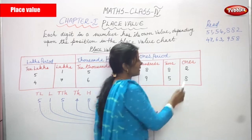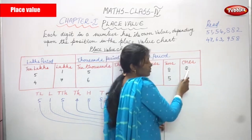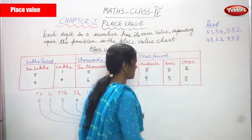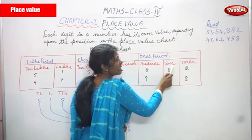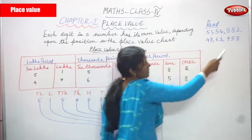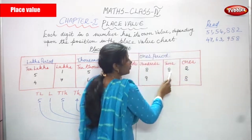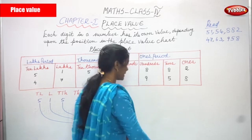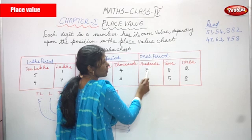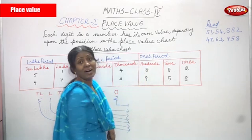The number in the ones place is two. Next, tens — what is the number in the tens place? Eight. Eight is in the position of tens. Next, again eight — this is the hundreds place. What is the number? Eight. So eight is in the position of hundreds.